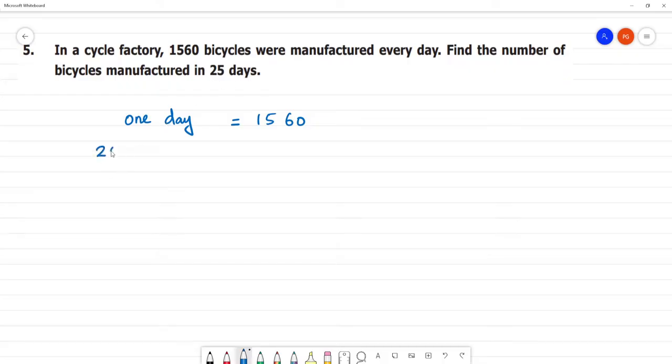25 days - how many cycles manufactured? We need to multiply the number 1560 by 25. So here is the calculation.